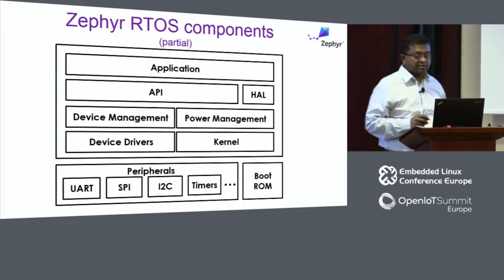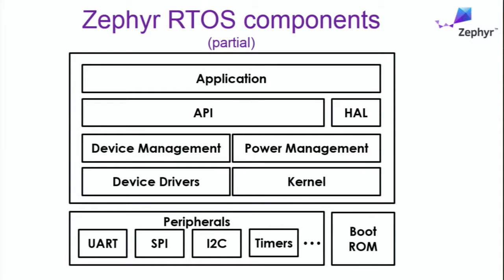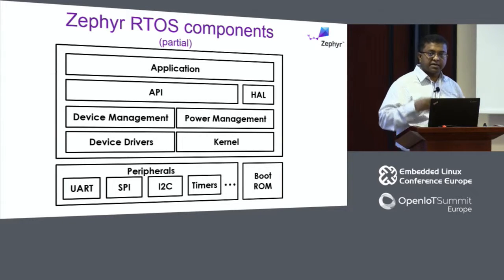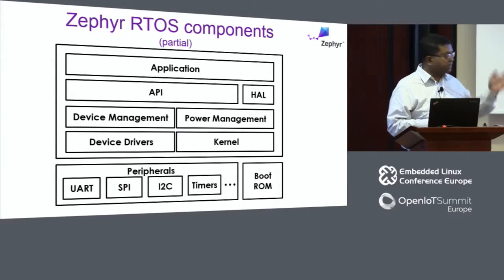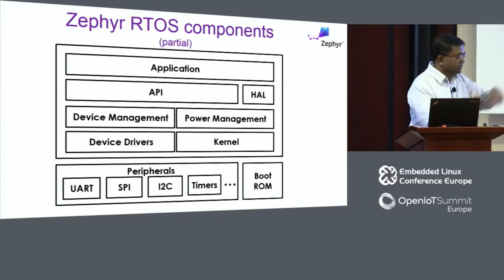I've shown some components that are relevant to power management. Mostly, we'll be talking about device management, the power management subsystem, and to some degree the kernel scheduler. We'll also touch on other components. As we talked about, the architecture-independent nature of Zephyr RTOS and the power management — how do we do it? Some components, the APIs for device management and power management, export interfaces to the applications. Those interfaces are device-independent and architecture-independent. The reason is that the application using them wouldn't have to change when you change the underlying devices and SOCs.